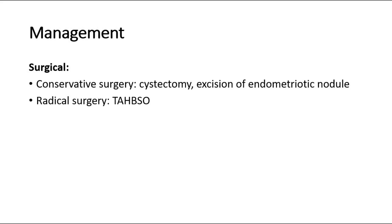For conservative surgery, the aim is removal and destruction of all endometrial implants; cystectomy of the endometrioma and excision of endometriotic nodules can be done. For radical surgery, total abdominal hysterectomy with bilateral salpingo-oophorectomy can be performed. This is done when there is recurrence of endometriosis or persistent symptoms, the family is complete and the patient does not desire future childbirth, or the patient is more than 40 years old with endometrioma present.